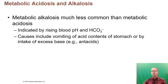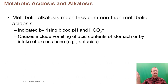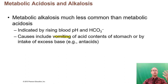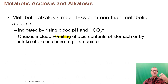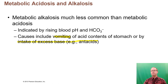Metabolic alkalosis results in higher blood pH with normal CO2 levels. One of the most common causes is vomiting — when we vomit, we lose stomach acid, and in order to make more stomach acid the body produces bicarbonate, raising blood pH. This is the alkaline tide discussed in the digestive chapter. A second cause is over-consumption of antacids. The treatment for metabolic alkalosis from antacids is simply to stop taking them.